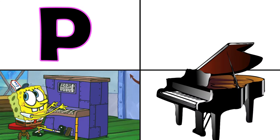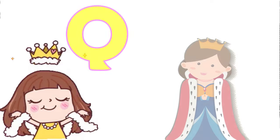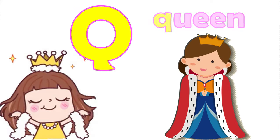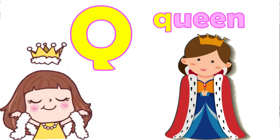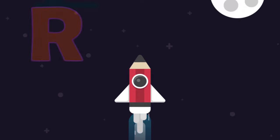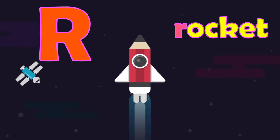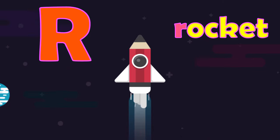P is for piano, p. Q is for queen, q. R is for rocket, r.